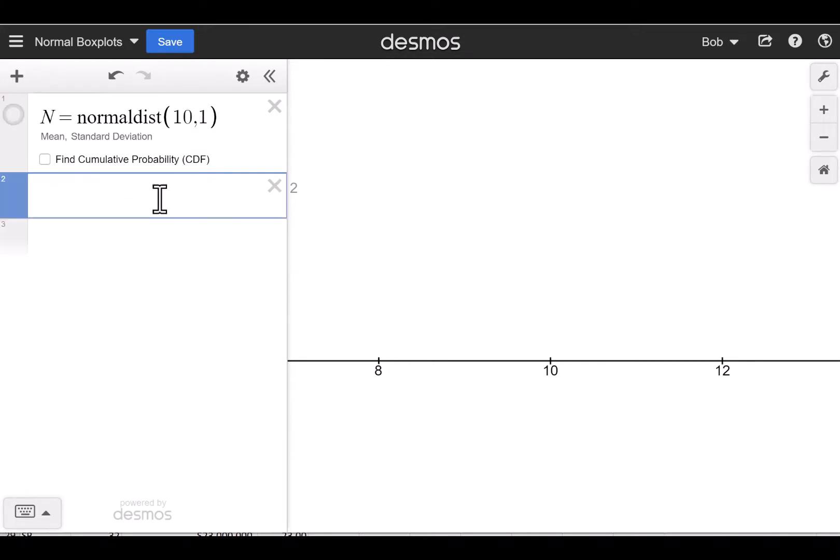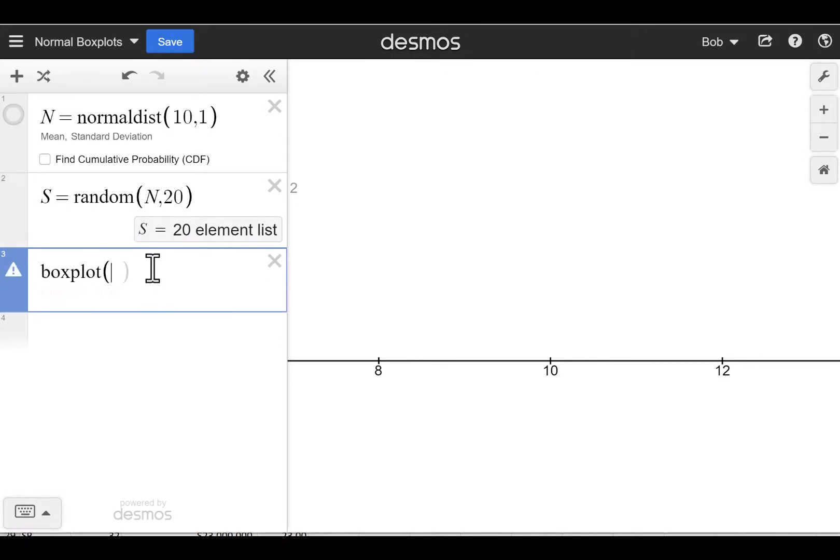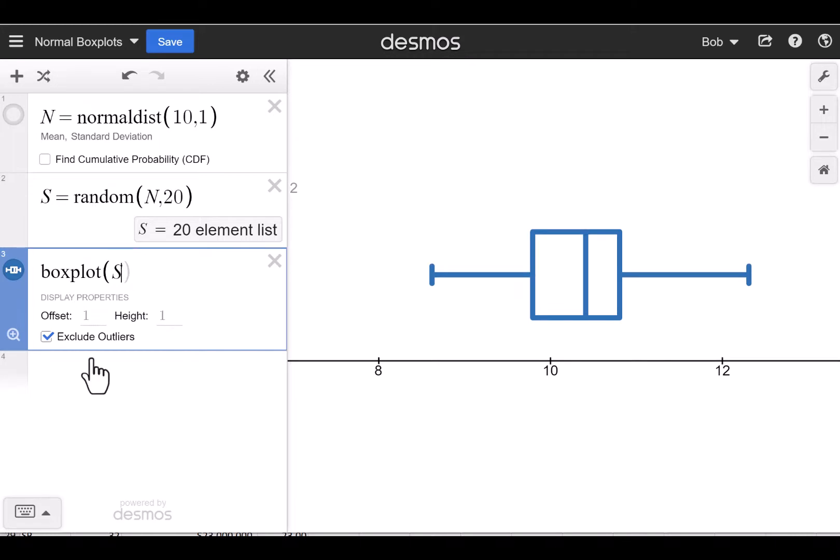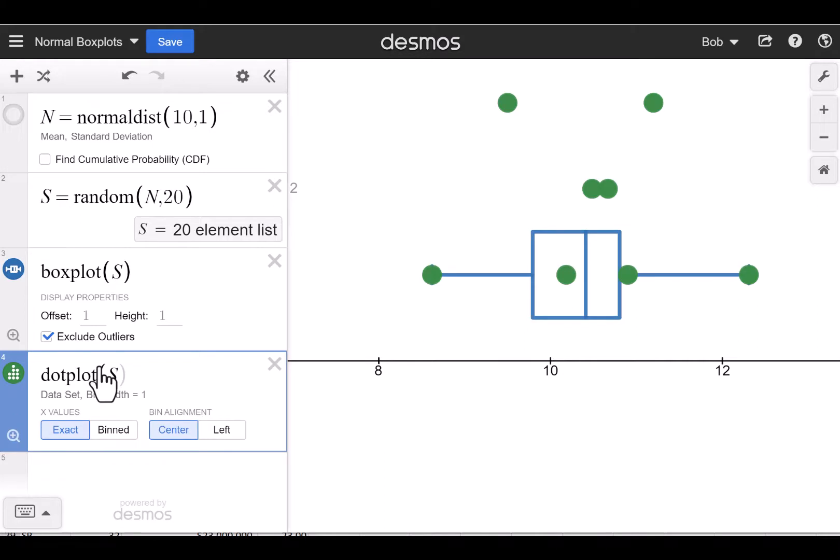Let me go backwards here and just kind of show you from scratch. I have this normal distribution and I said S equals random, and notice when random is typed the letters are no longer italicized meaning that Desmos likes that. I'm going to take a random sample from N with sample size 20. If I just do it one time, I can now make a box plot of that random sample. There it is. And you can even do a dot plot as well. Notice we can see both of those.